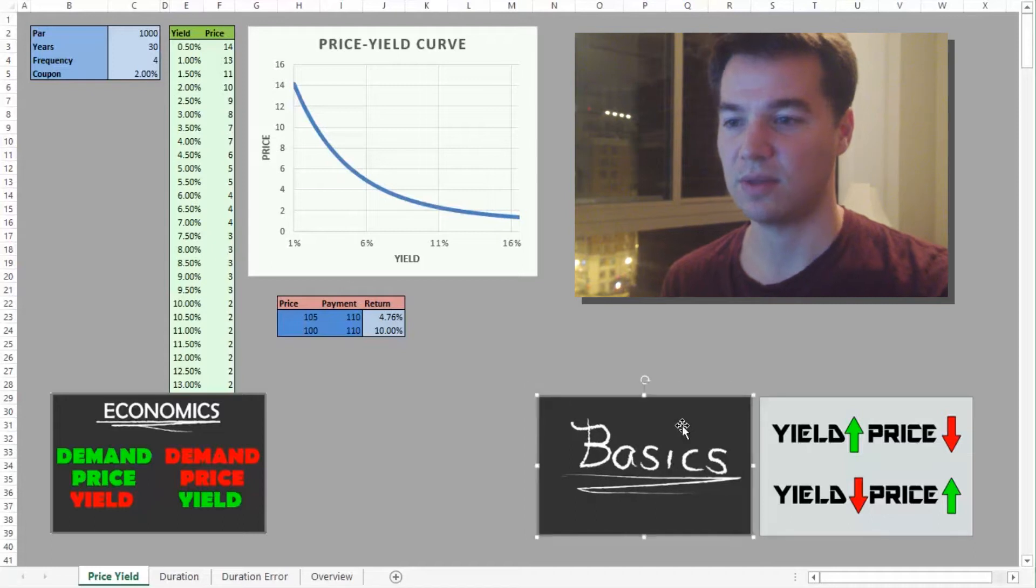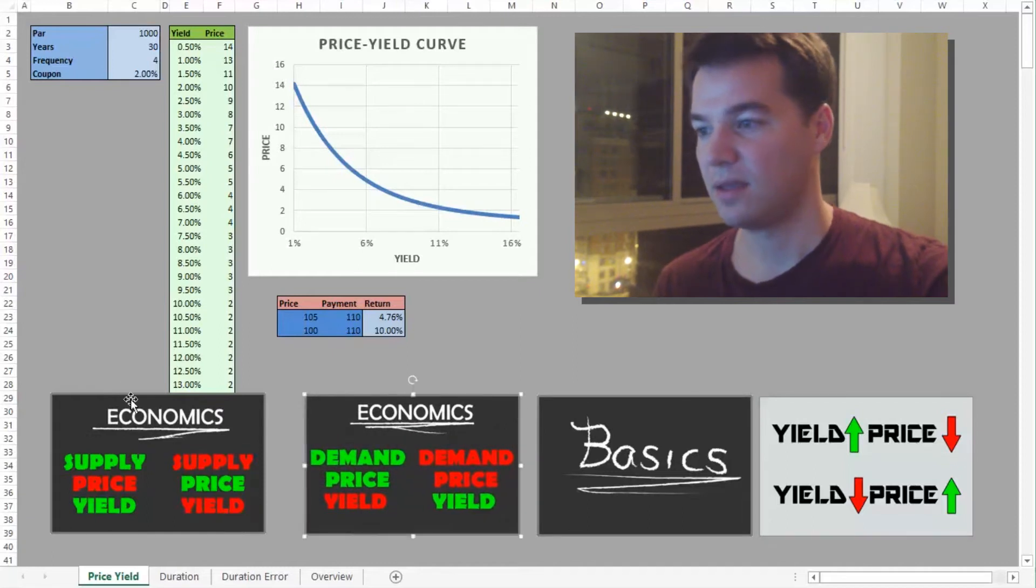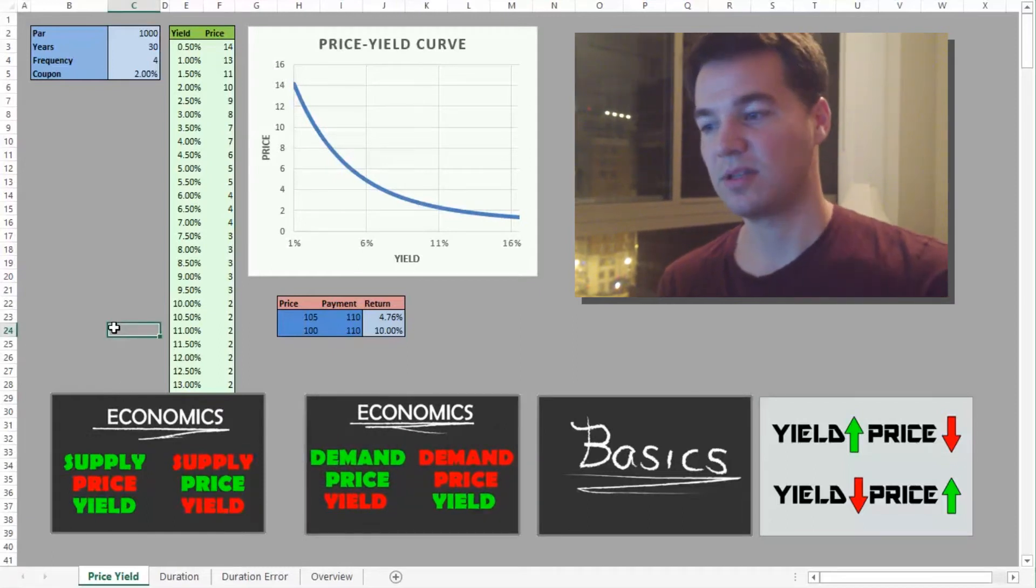And I think it's smarter to think about that through an economic standpoint. So as demand for bonds increases, prices go up, yields go down. Demand decreases, prices go down, yields go up. And from the supply side, with an abundance of bonds, prices go down, yields go up. Scarcity of bonds, prices go up, yields go down.